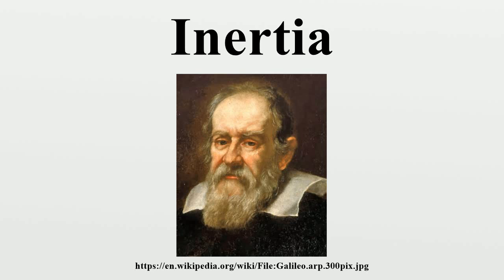In the 14th century, Jean Buridan rejected the notion that the motion-generating property, which he named impetus, dissipated spontaneously. Buridan also maintained that impetus increased with speed. Thus, his initial idea of impetus was similar in many ways to the modern concept of momentum. Despite the obvious similarities to more modern ideas of inertia, Buridan saw his theory as only a modification to Aristotle's basic philosophy, maintaining many other peripatetic views, including the belief that there was still a fundamental difference between an object in motion and an object at rest. Buridan also believed that impetus could be not only linear, but also circular in nature, causing objects to move in a circle.